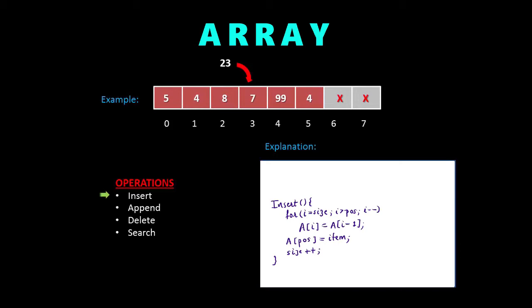In this example, we want to insert 23 into location 3, so we shift all items after that position to the right to make room.